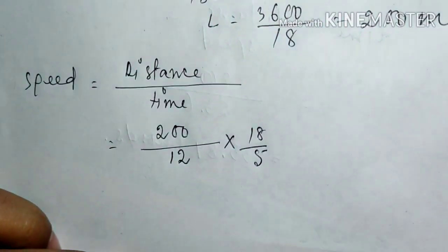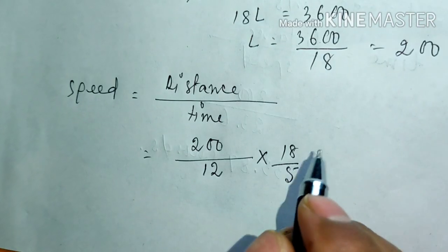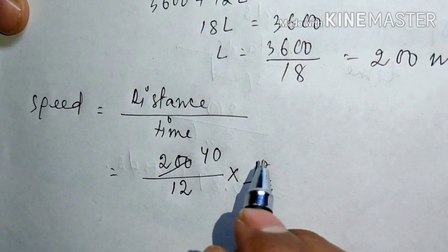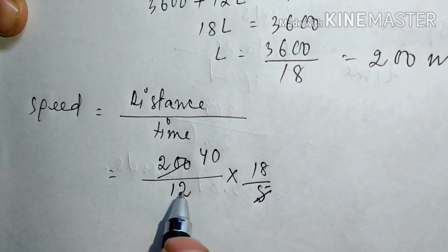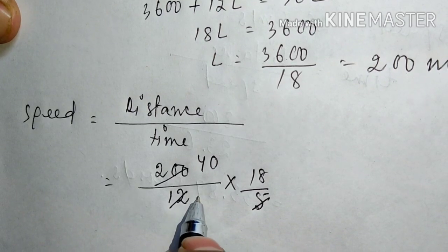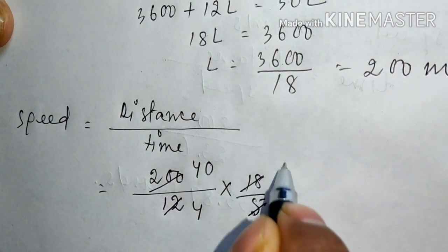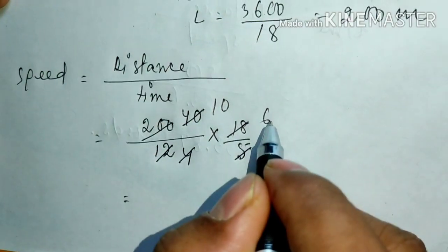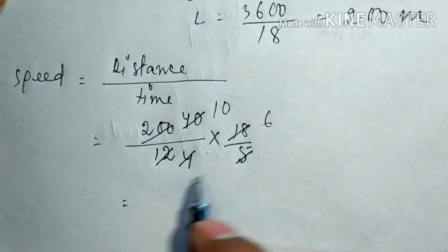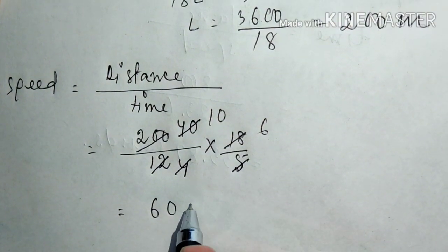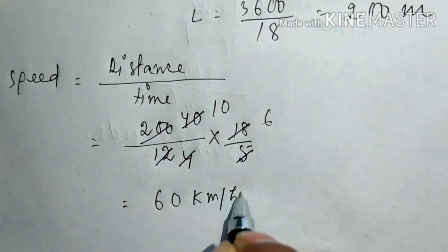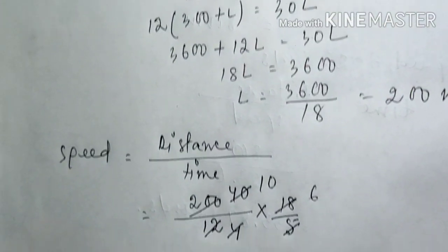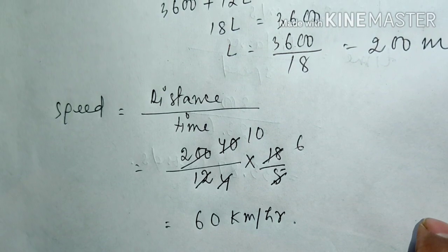Multiplying 200 divided by 12 by 18 by 5: the 5 cancels with factors in the calculation, and working through the arithmetic gives us 60. So the speed of the train is 60 kilometers per hour. Here we finish solving question number 7a.